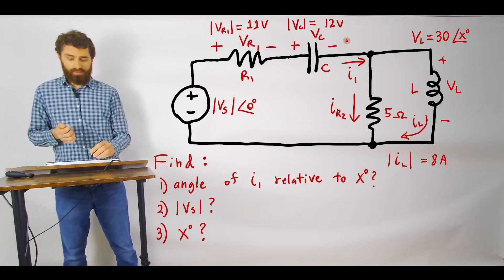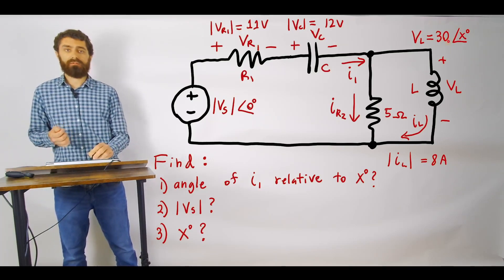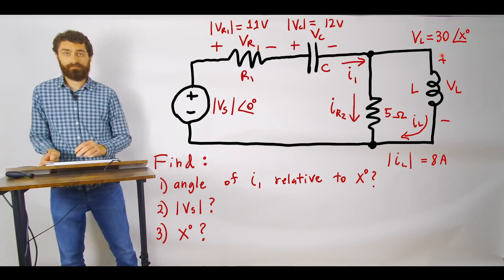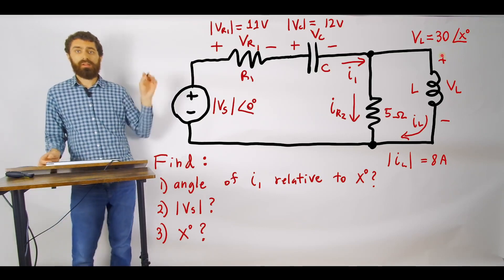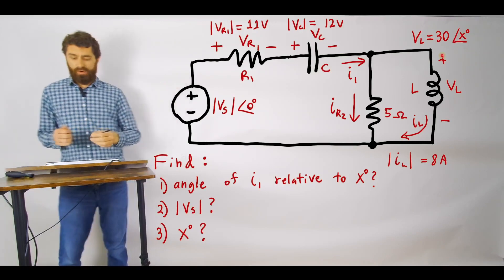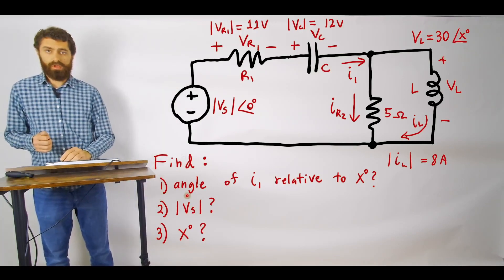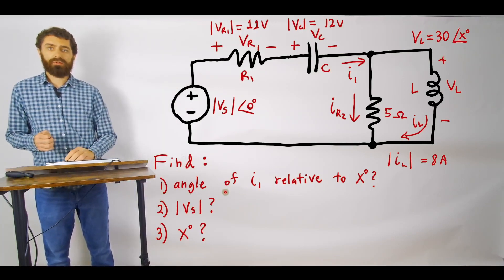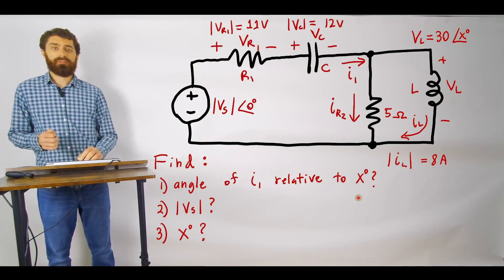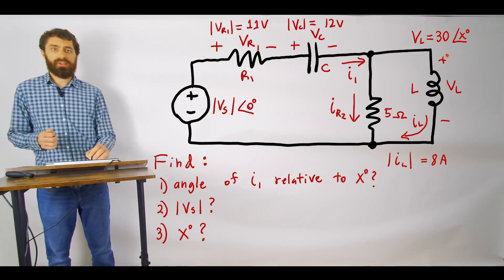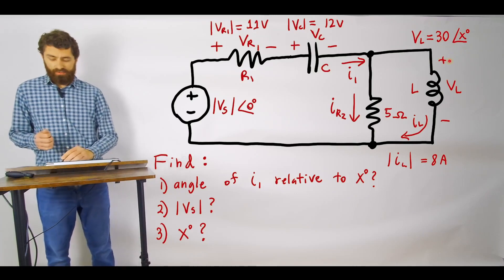the capacitor, we're also given the magnitude of the voltage across the inductor. And so using these given values they want us to find: 1) the angle, the phase angle of I1 relative to this phase angle, 2) they want